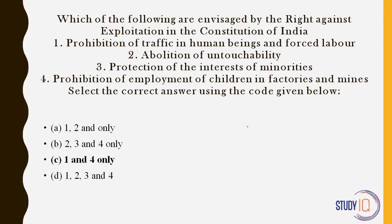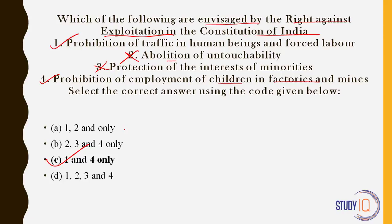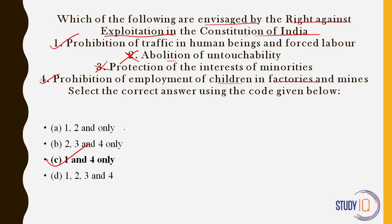Which of the following are envisaged by the right against exploitation in the Constitution of India? Prohibition of traffic in human beings and forced labor — yes, this is Article 23, under right against exploitation. Abolition of untouchability — no, this is Article 17 under right to equality. Protection of interests of minorities — no, this is under educational and cultural rights. Prohibition of employment of children in factories and mines — yes, this is Article 24, also under right against exploitation. Answer is 1 and 4. Simple question: right against exploitation covers Articles 23 and 24. Right to equality is Articles 14 to 18. Cultural and educational rights are Articles 29 and 30.